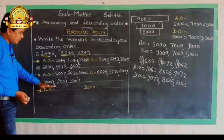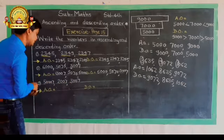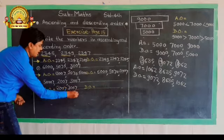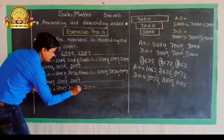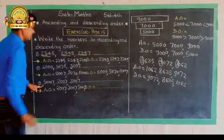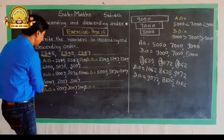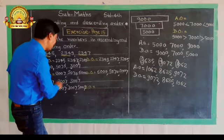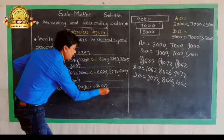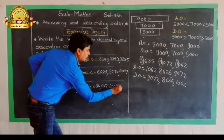We have a 5-digit number and two 4-digit numbers. The 5-digit number is 50,007. Since 50,007 is a 5-digit number, it is bigger than the 4-digit numbers 3,007 and 2,007. Among the 4-digit numbers, 3,007 is bigger than 2,007. So ascending order is: 2,007, 3,007, 50,007. And descending order starts with the 5-digit number: 50,007, then 3,007, then 2,007.